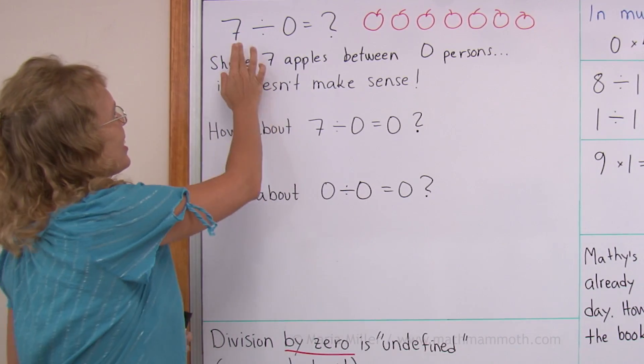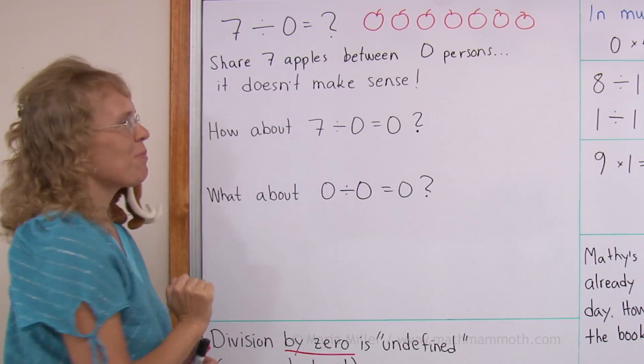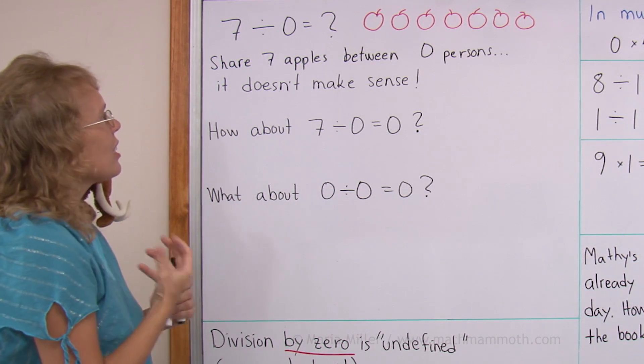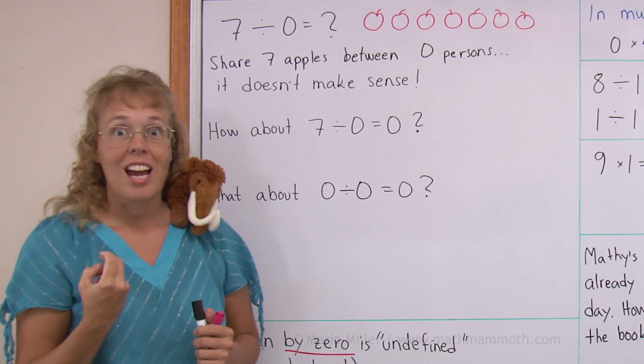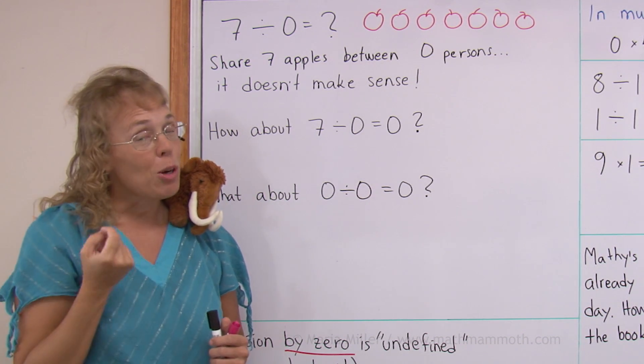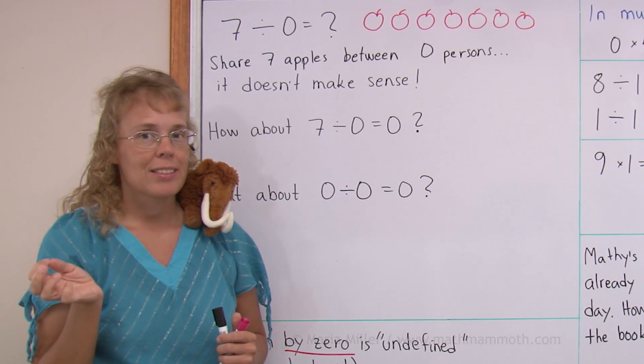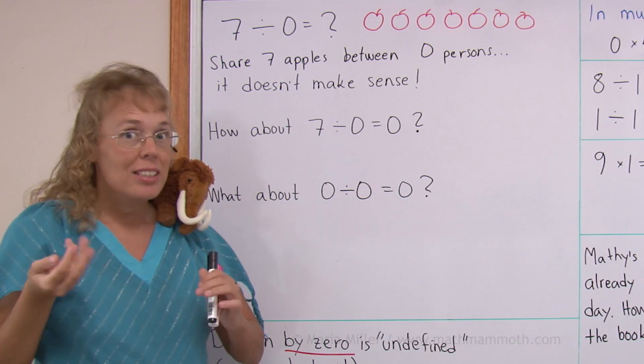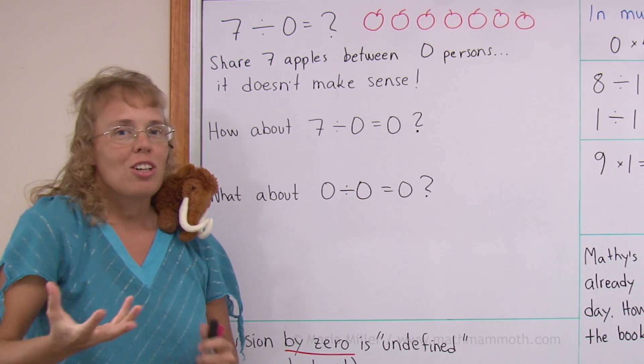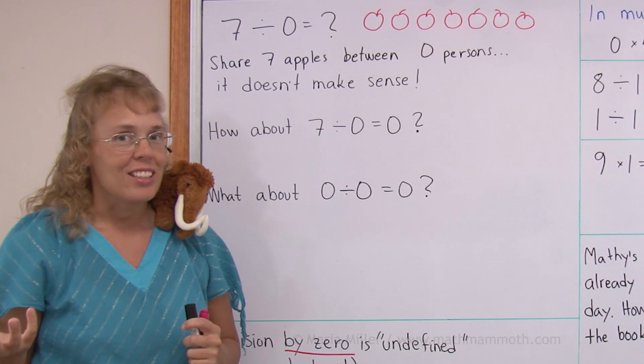In this lesson we are studying zero in division because it leads to some interesting situations. For example, if I have the problem seven divided by zero, then what would be the answer? If you think about it, it could mean that let's say you have seven apples and you're gonna share them or divide them between zero people, zero persons. Then how many apples will each person get? Now that just doesn't make sense because you don't have any people, zero people. So you can't talk about how many will each get, right?